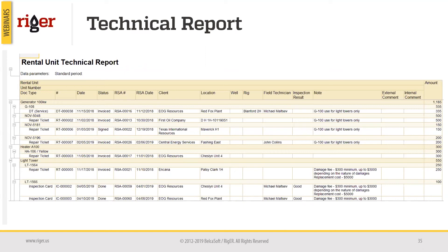The rental unit technical report shows the document type that triggered each action, the document number, date, status, rental ticket number, rental ticket date, client, and other details. The main purpose of this report is to provide in-depth technical information about each document — whether it was in the stage of repair or inspection — and shows how much was charged to the client. That's everything about the reports.